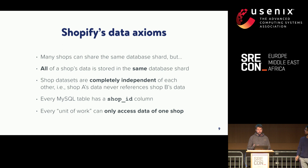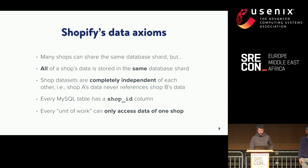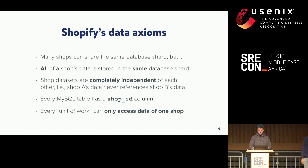Our data set is very easily partitioned by shop ID, which was a nice property to take advantage of. To make this even easier, we have a rule enforced in our application that every single table must have a shop ID column, which allows us to very efficiently decide which shop the data belongs to. Finally, every unit of work — whether a web request, background job, or maintenance task — can only operate on one shop at a time. If you want to access two shops, you need to make two requests, and you'll see later why that's relevant.